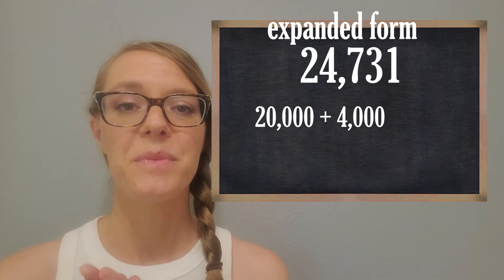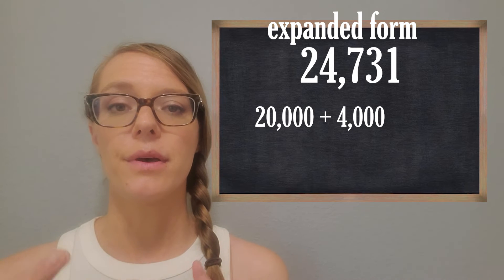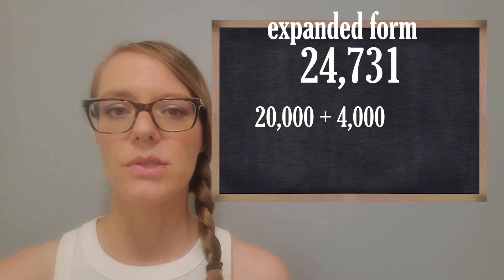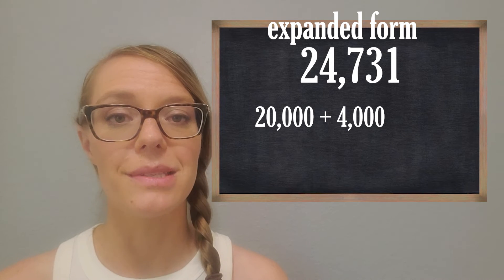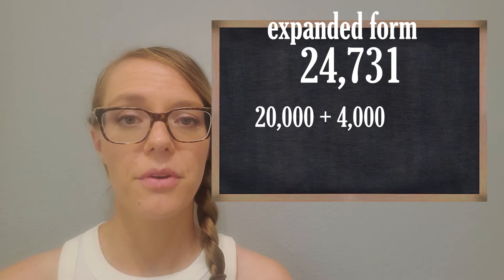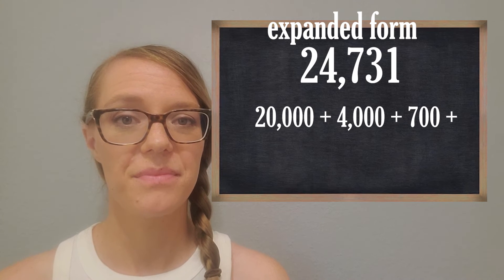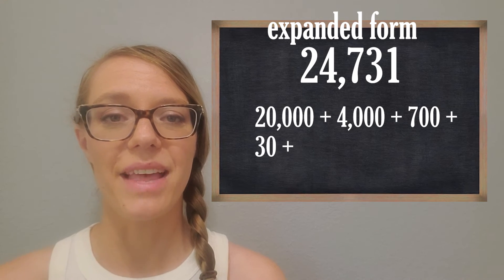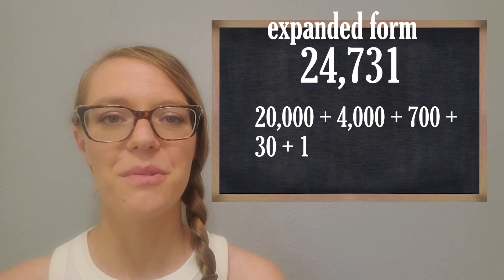The hundreds, tens, and ones are the easiest to work on, so this next part will be a breeze. The seven is worth 700, the three is worth 30, and the one — that last digit — is worth just one. You got it!